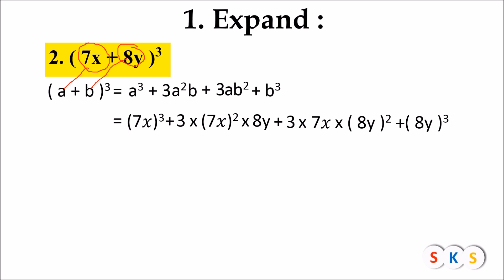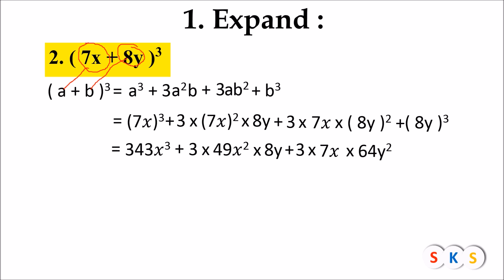Simplifying each term: (7x)³ = 7 × 7 × 7 × x³ = 343x³. Then 3 × (7x)² × 8y = 3 × 49x² × 8y. And 3 × 7x × (8y)² = 3 × 7x × 64y². The last term (8y)³ = 8 × 8 × 8 × y³ = 512y³.